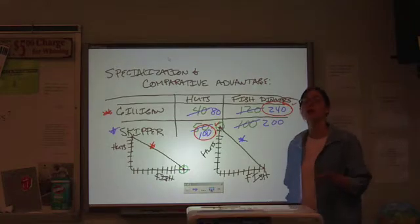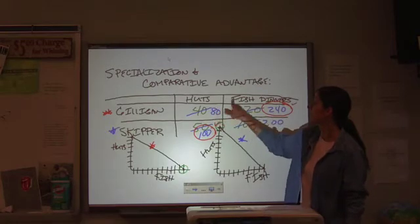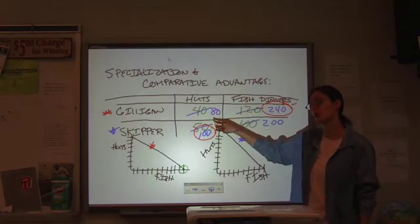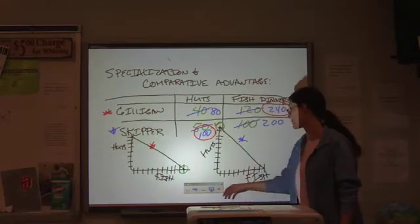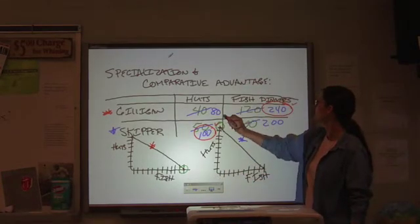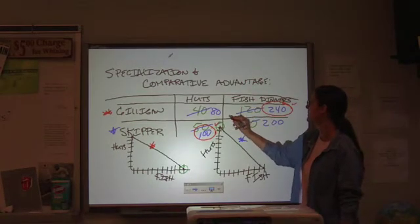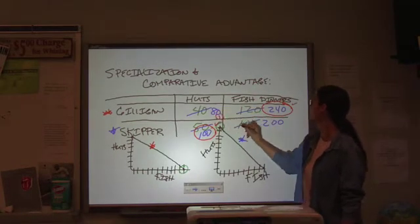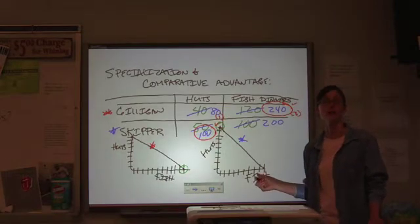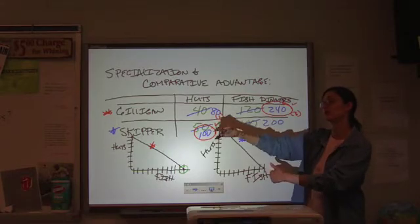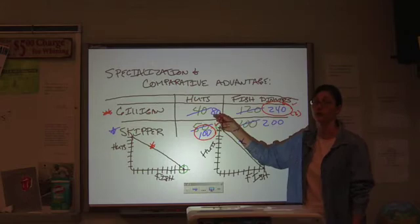We want to look at what it costs in the terms of each product. What are you giving up to produce units of the other product? So, for Gilligan, our ratio is one to three. One hut is worth three fish dinners because we divide. Or, conversely doing it the other way, one fish dinner is worth a third of a hut.